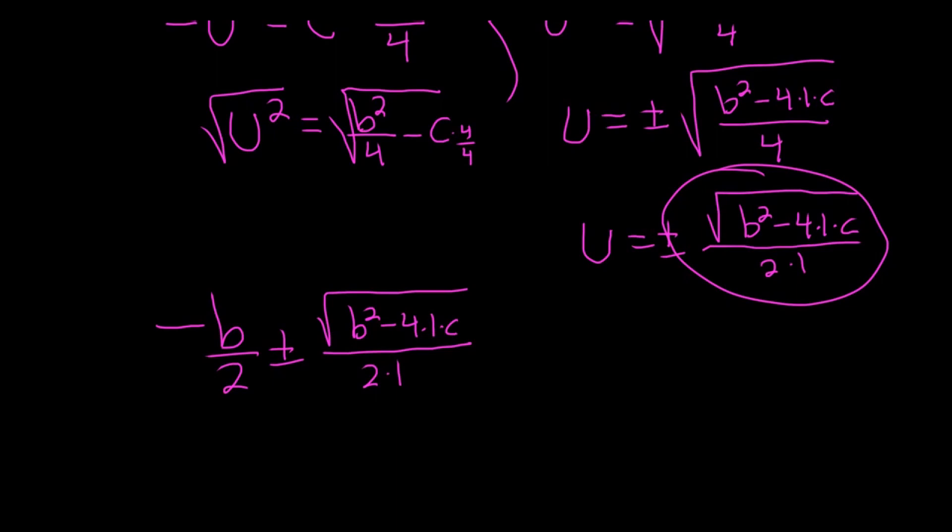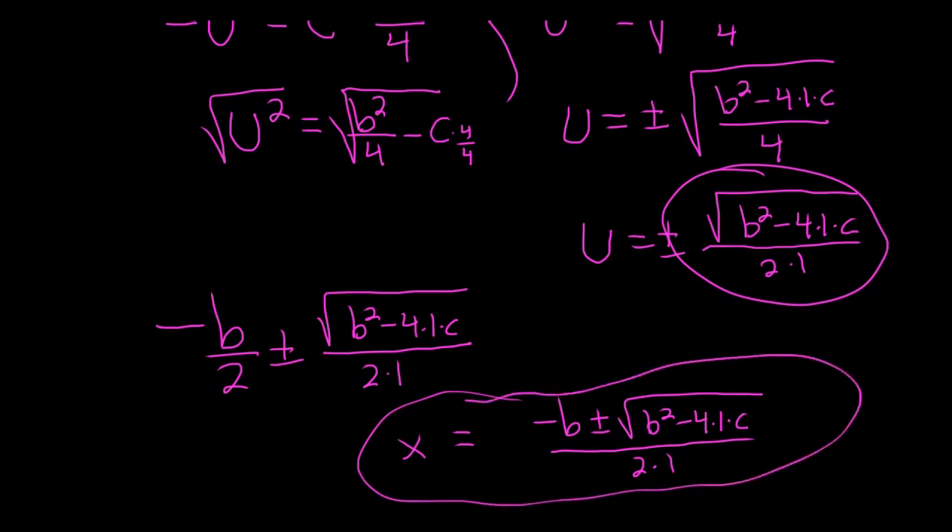And that is the quadratic formula, right? You can write it like this: -b plus or minus the square root of b² - 4ac, a is 1, over 2 times a. So I did that kind of quickly, but that would be x. But I wanted to show you why this method works.